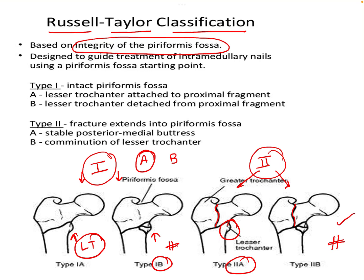This is the Russell and Taylor classification, which is the most commonly used classification for subtrochanteric fractures.